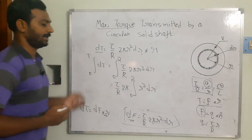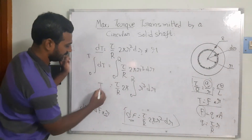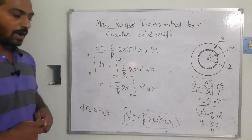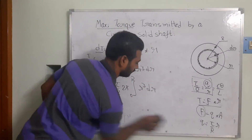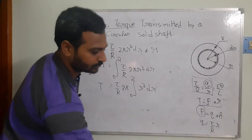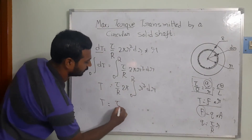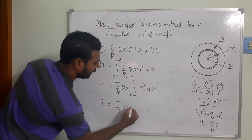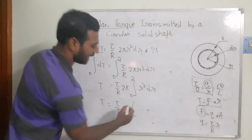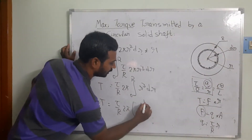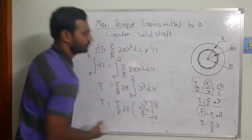Performing the integration, T equals (τ/R)·2π times [r⁴/4] evaluated from 0 to R.